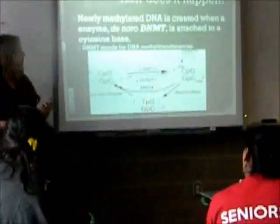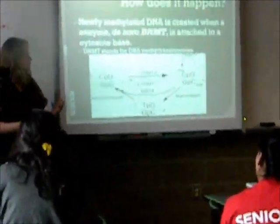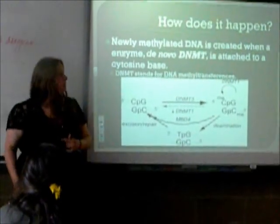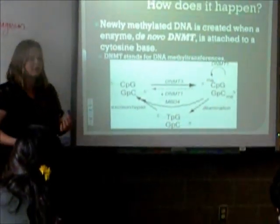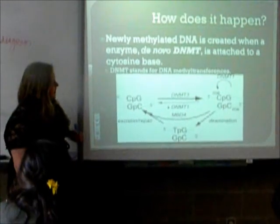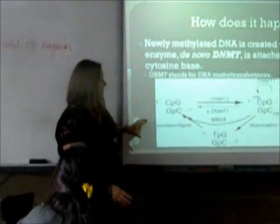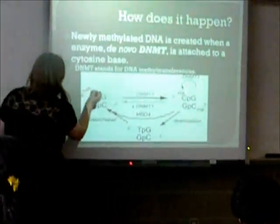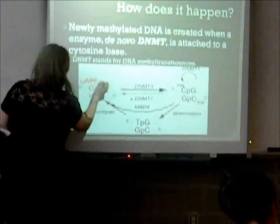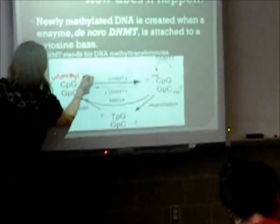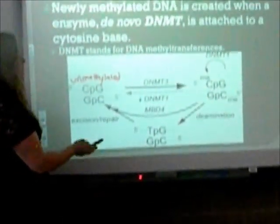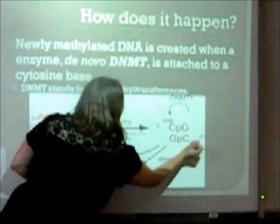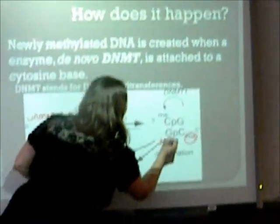Methylation happens when a methyl group attaches to a CpG site, and that is done with the help of an enzyme called the de novo DNMT, which attaches the methyl group to the cytosine base. This is a somewhat complicated diagram because it shows a couple of other processes that happen, but you start out with this unmethylated gene, and the de novo DNMT attaches the methyl group, which makes it methylated.